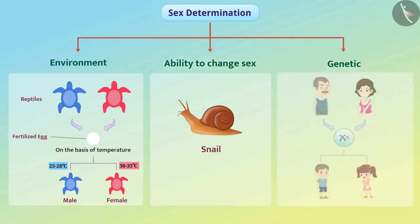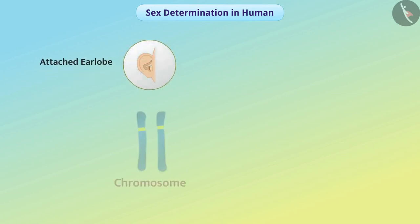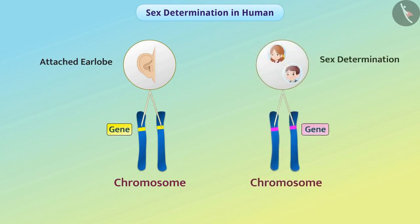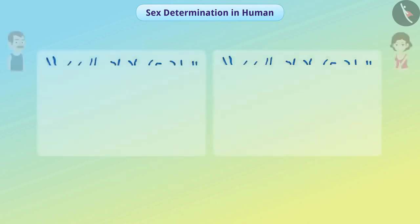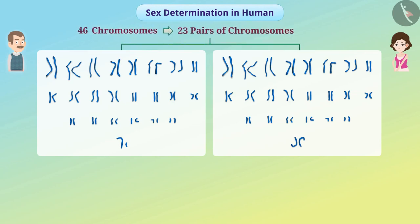That means sex determination in snails is not genetic. Sex determination in humans, however, is genetically determined. As we learned previously, the expression of a trait depends on the gene, and sex determination of a zygote also depends on genes. Humans have a total of 46 chromosomes, which make 23 pairs of chromosomes.